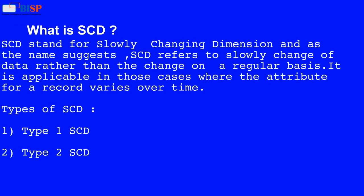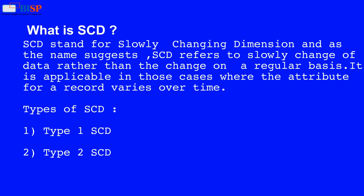What is SCD? SCD stands for slowly changing dimension, and as the name suggests, SCD refers to a slow change of data rather than change on a regular basis. It is applicable in those cases where the attribute for a record varies over time.